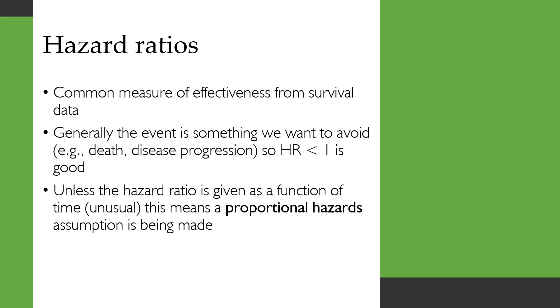So hazard ratios are a common measure of effectiveness, particularly from survival data. Generally the event that we're looking at is something that we want to avoid, such as death or disease progression, so having a hazard ratio less than one is good because it means you have a lower rate of that event.